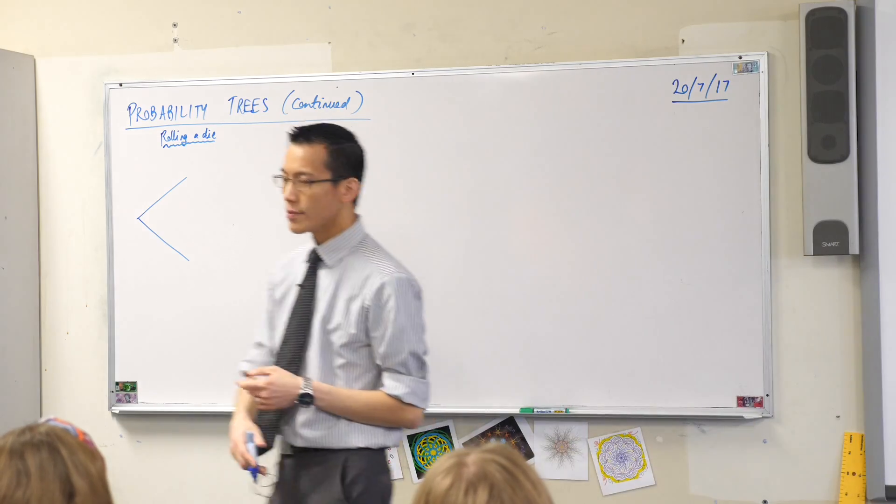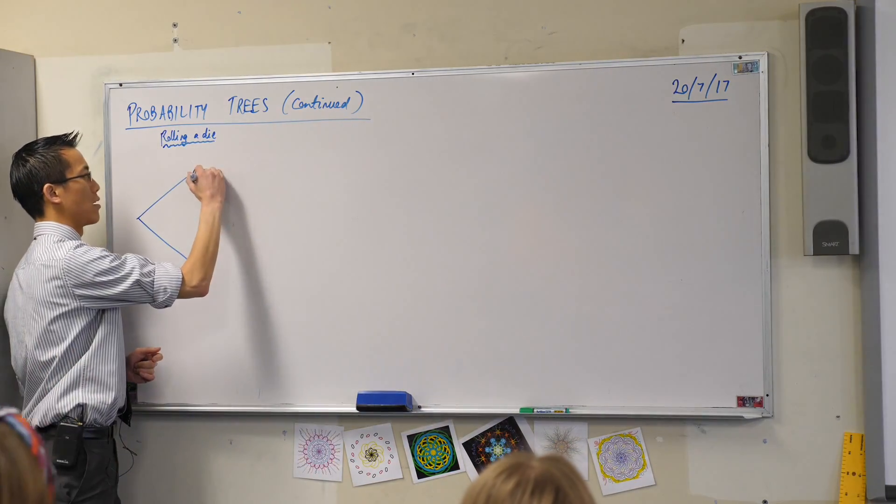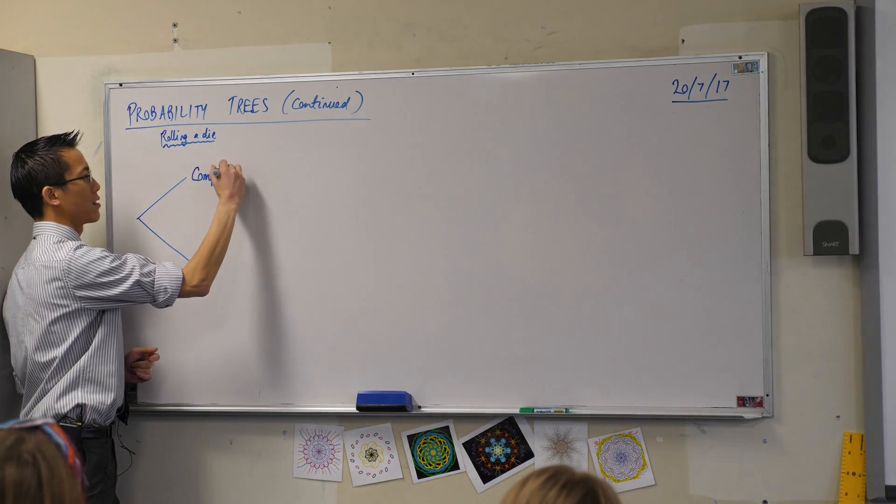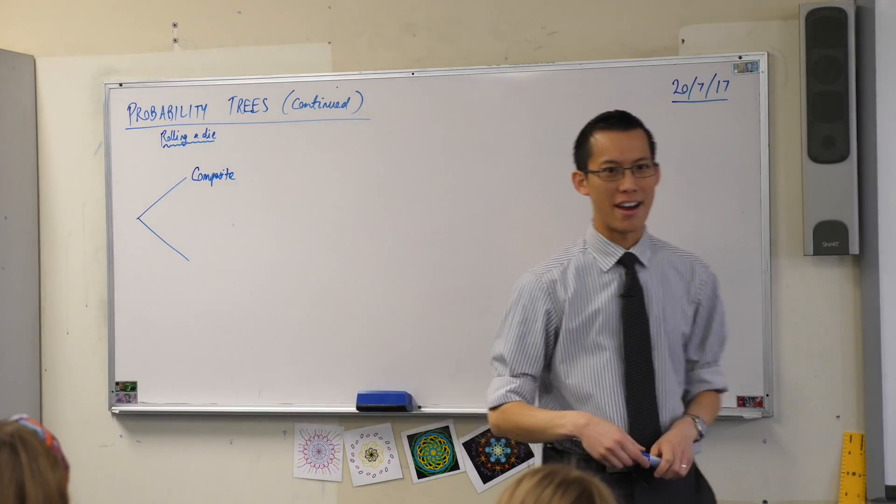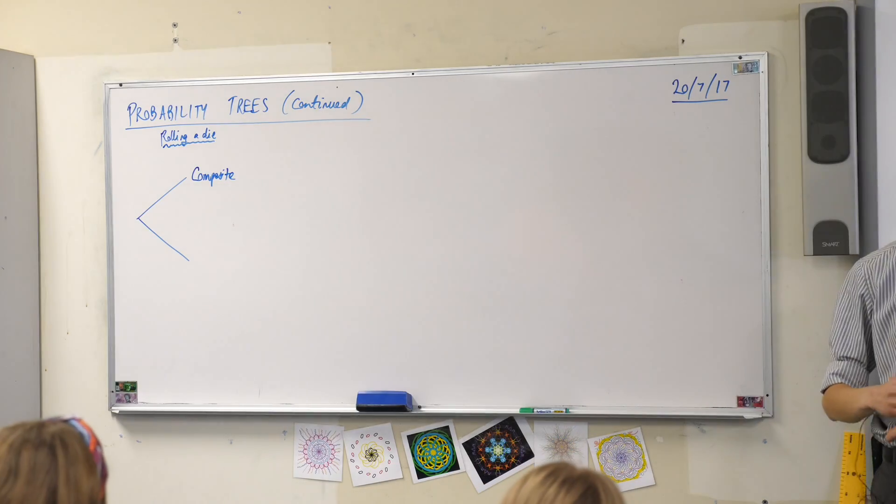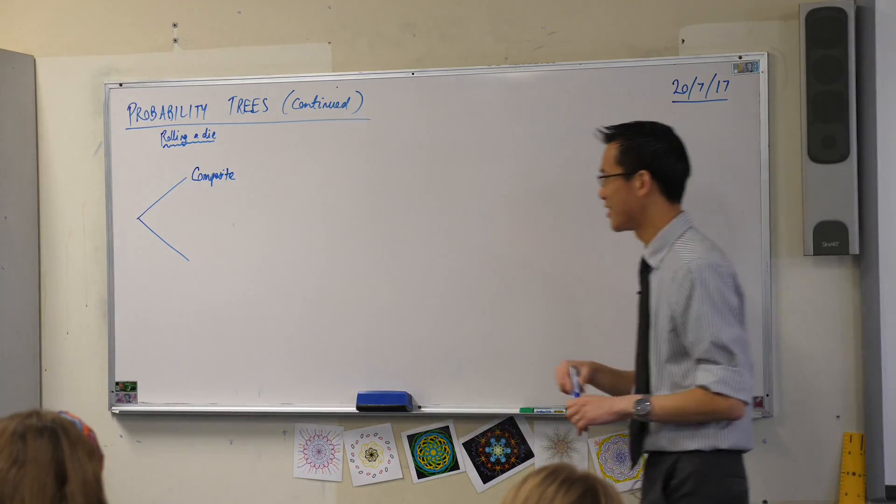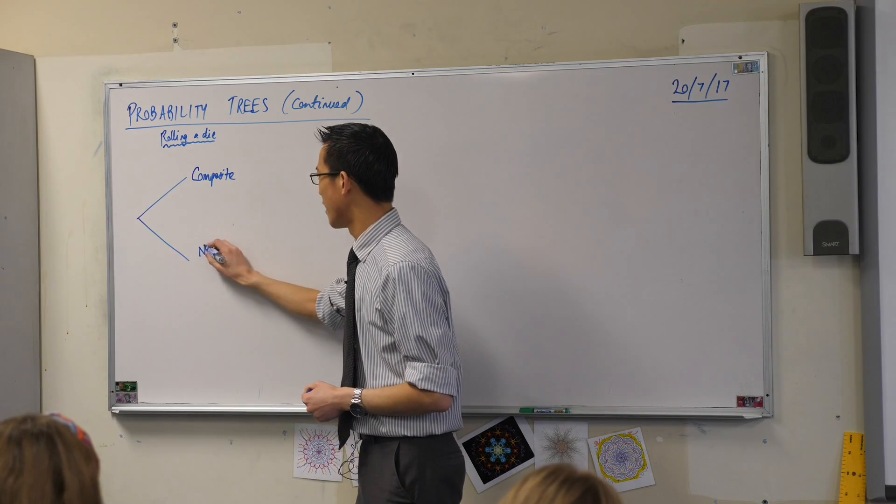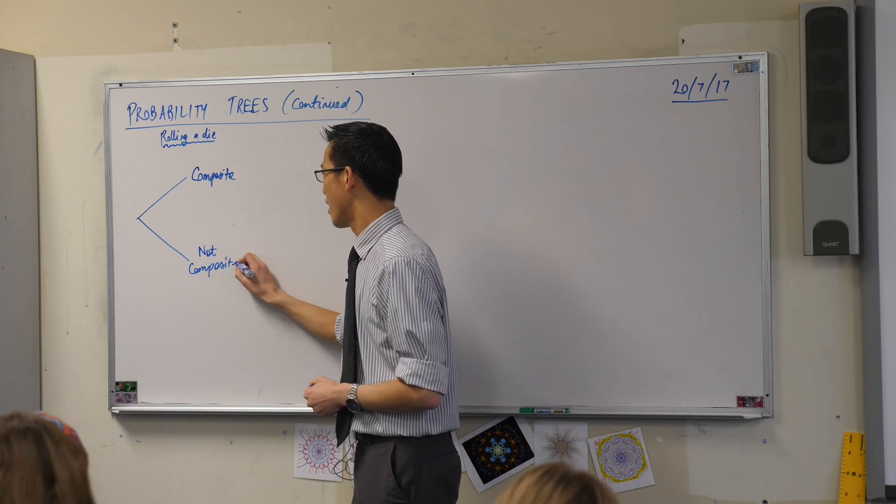So for example, I might decide to actually frame this a little bit differently. I might say, what's the probability of rolling a composite number? Now, you haven't heard the word composite number for a long time. Back in year seven was the last time you met this idea. But here, if you've got composite numbers, then you've got numbers that aren't composite.